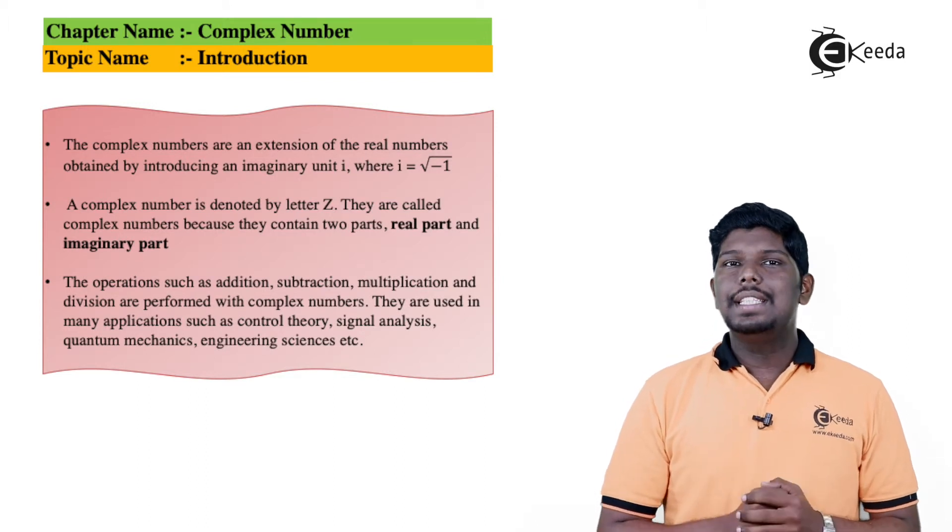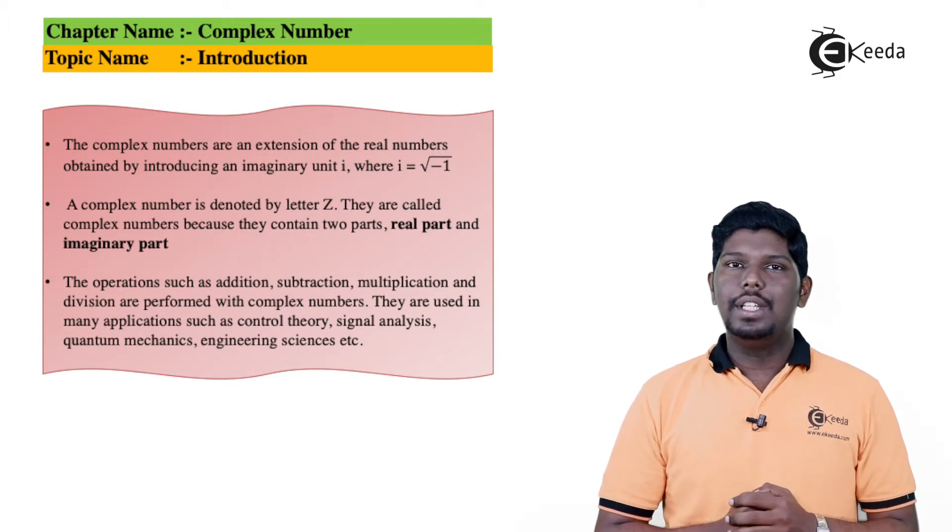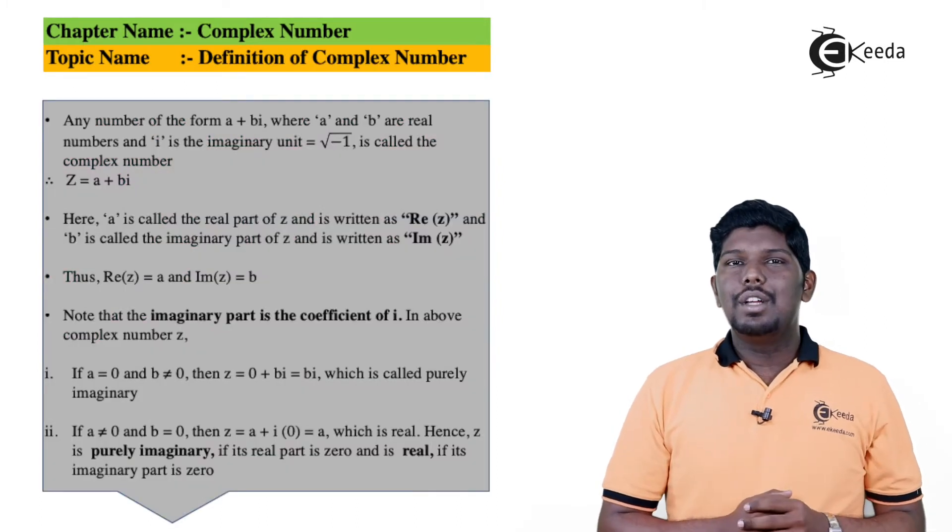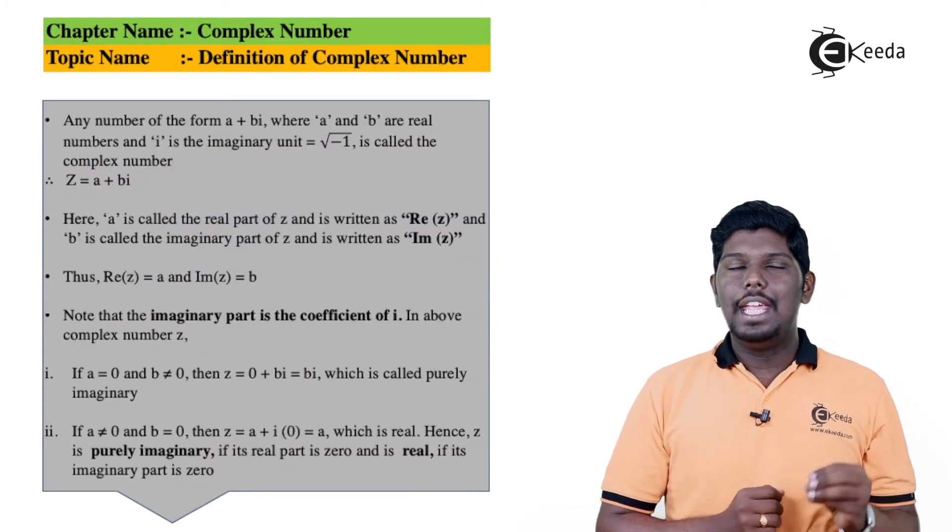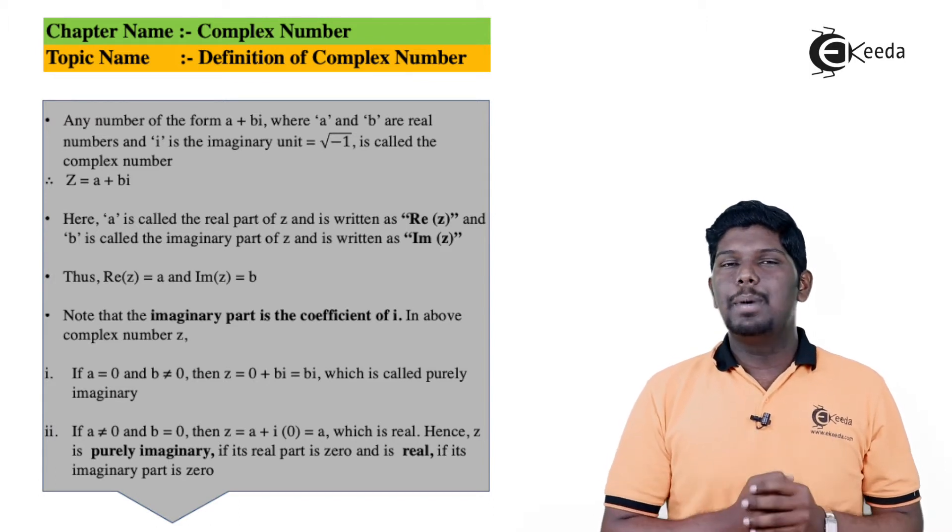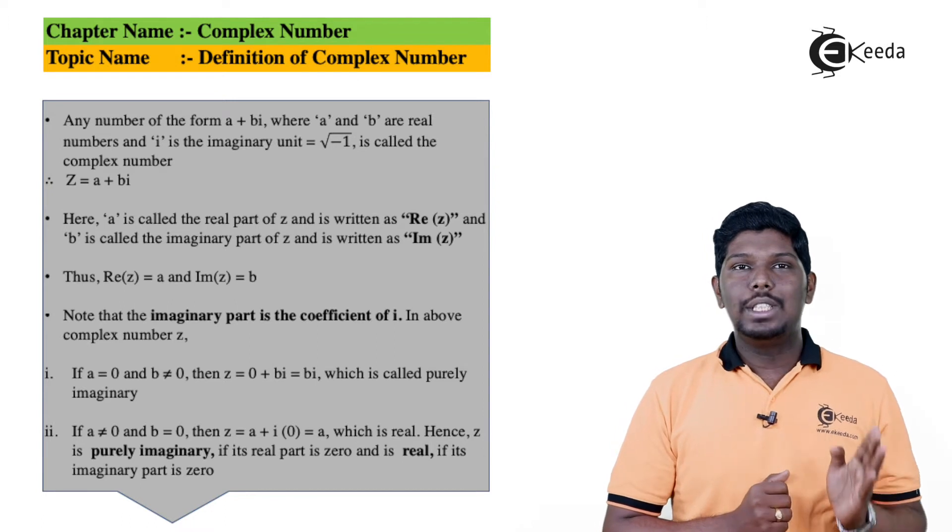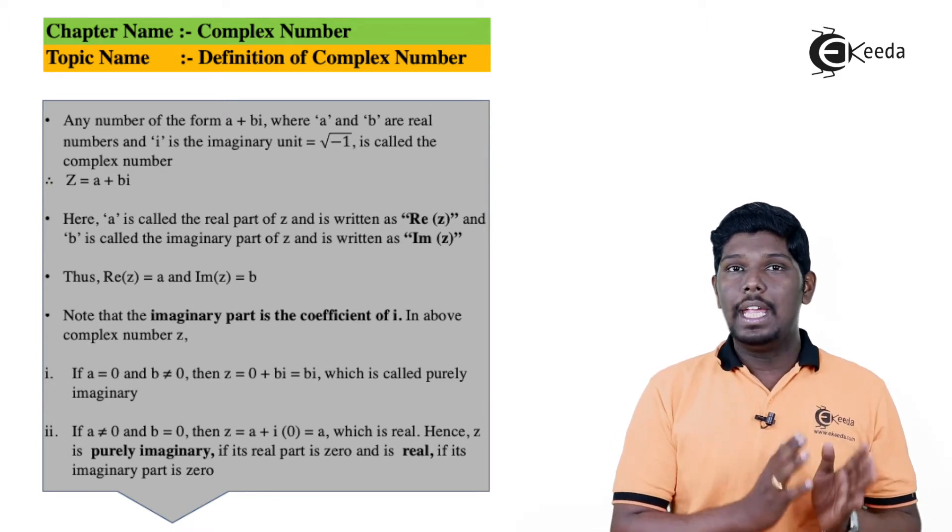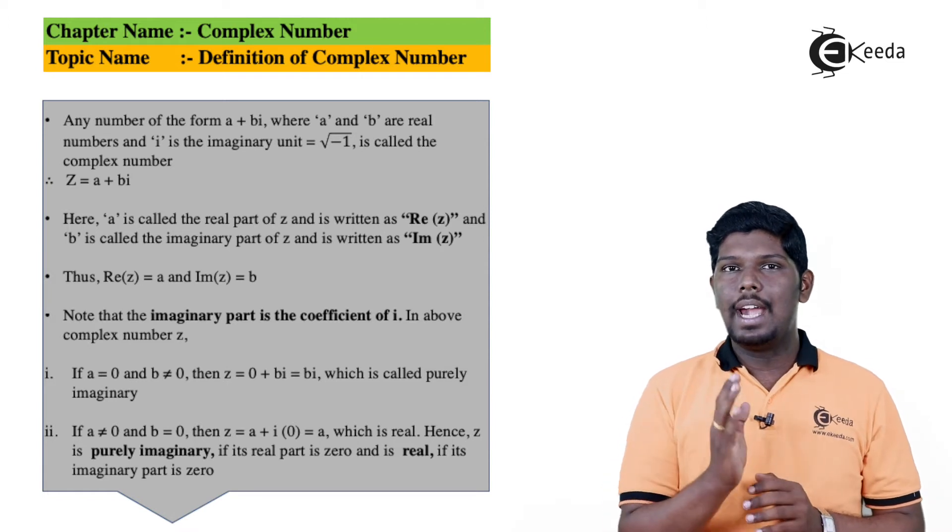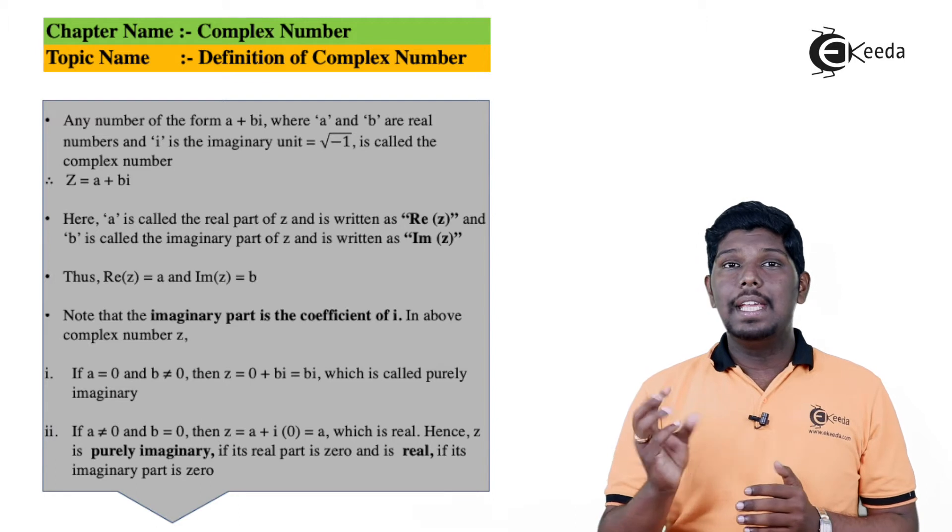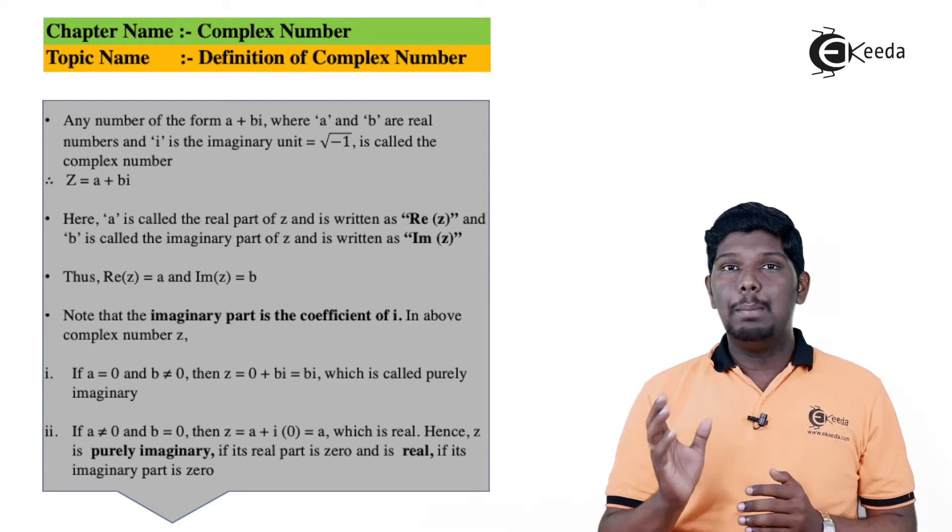The major applications of complex numbers are basically used in signal systems, quantum mechanics, engineering sciences, and different types of control theories. Now let us see the definition of complex number. A number which is in the form of a + bi, where a and b are real numbers and i represents the imaginary term, is called a complex number. Here a is called the real part and b is called the imaginary part.